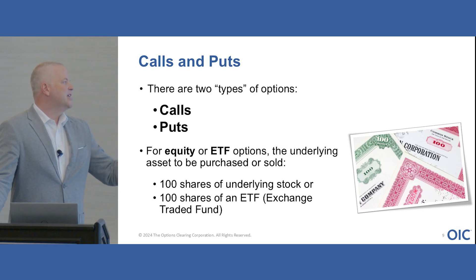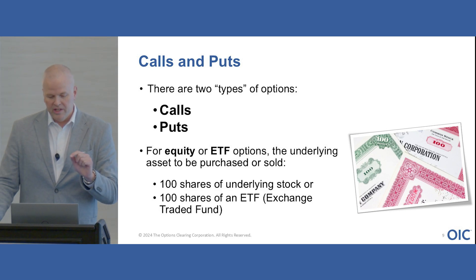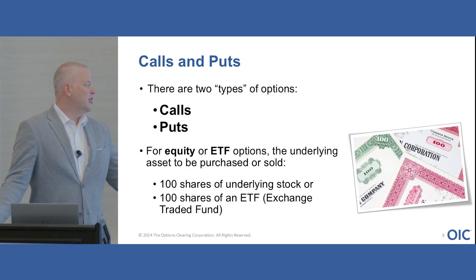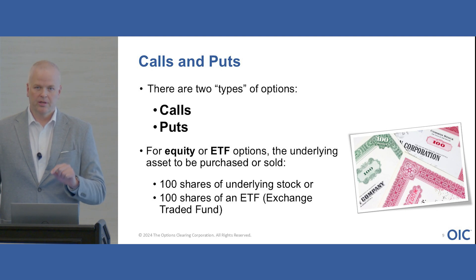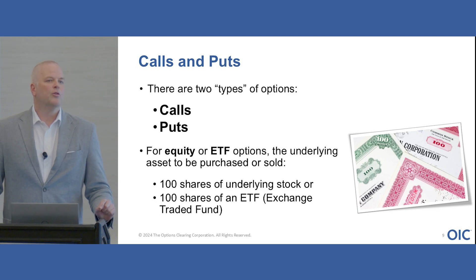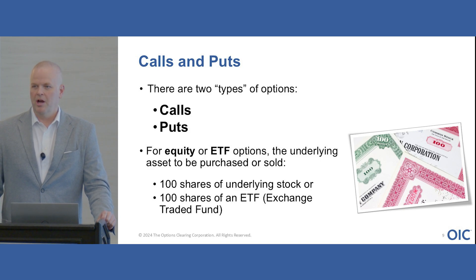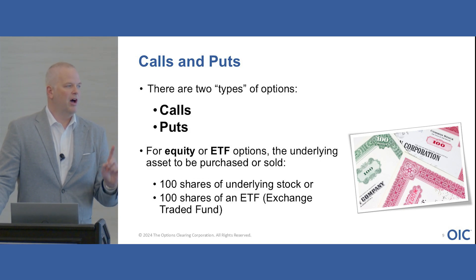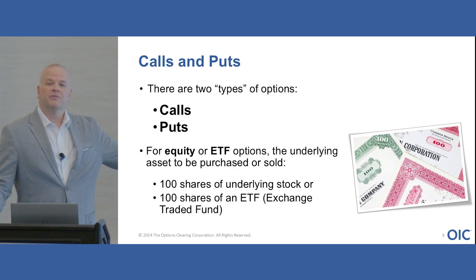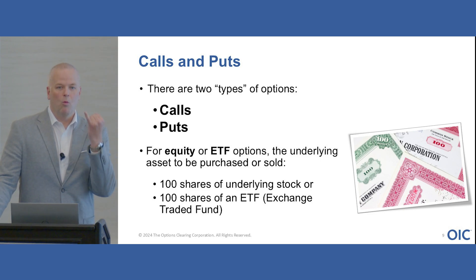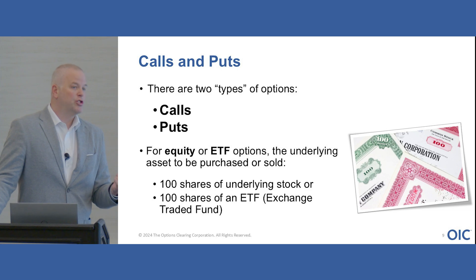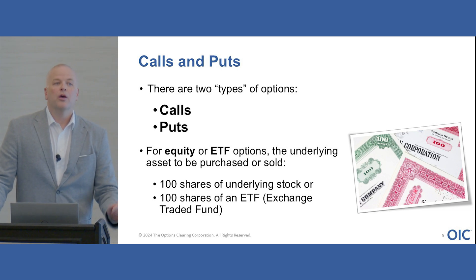For equity and ETF options, the underlying asset to be acquired or sold generally is 100 shares of the underlying stock or ETF. This is where leverage comes into play. Trading a one lot of options allows you to control 100 shares of the underlying through the exercise and assignment process — that's the built-in leverage in these contracts.